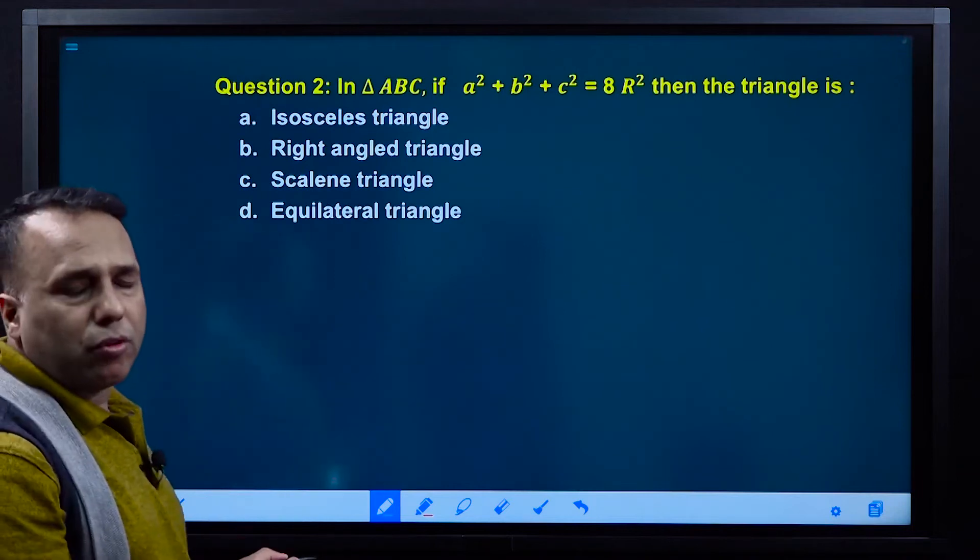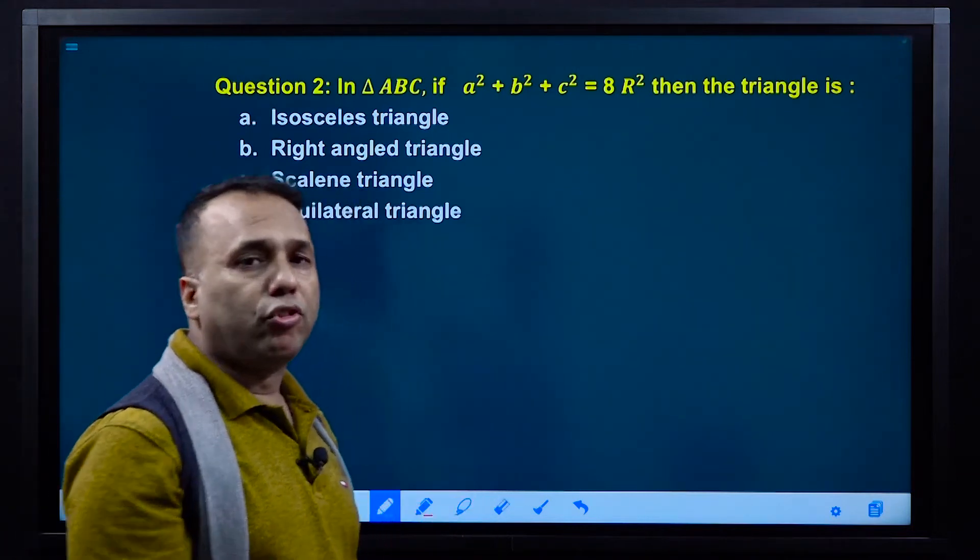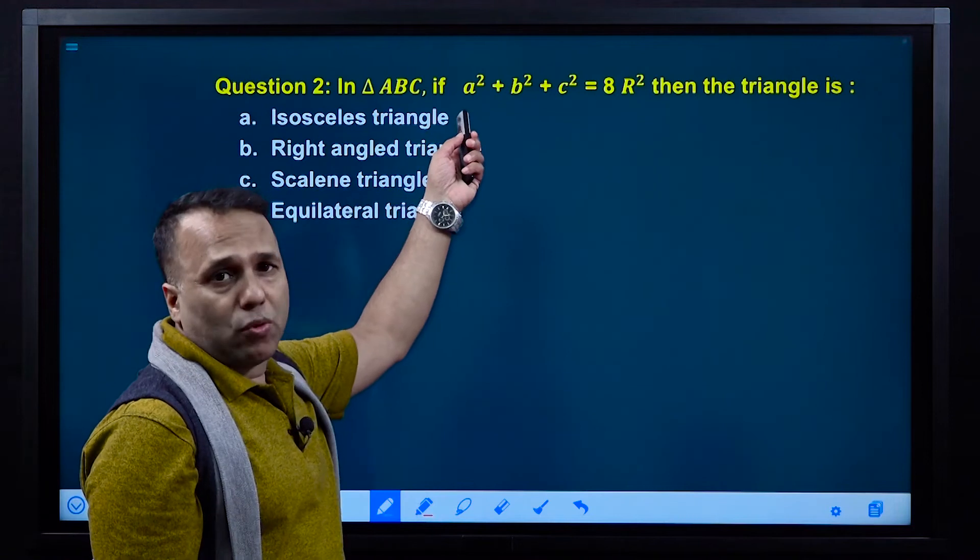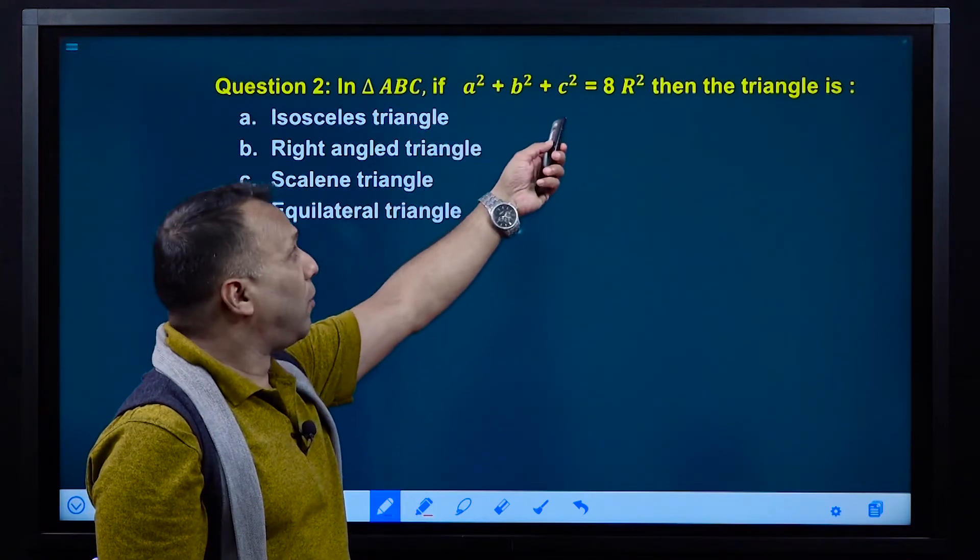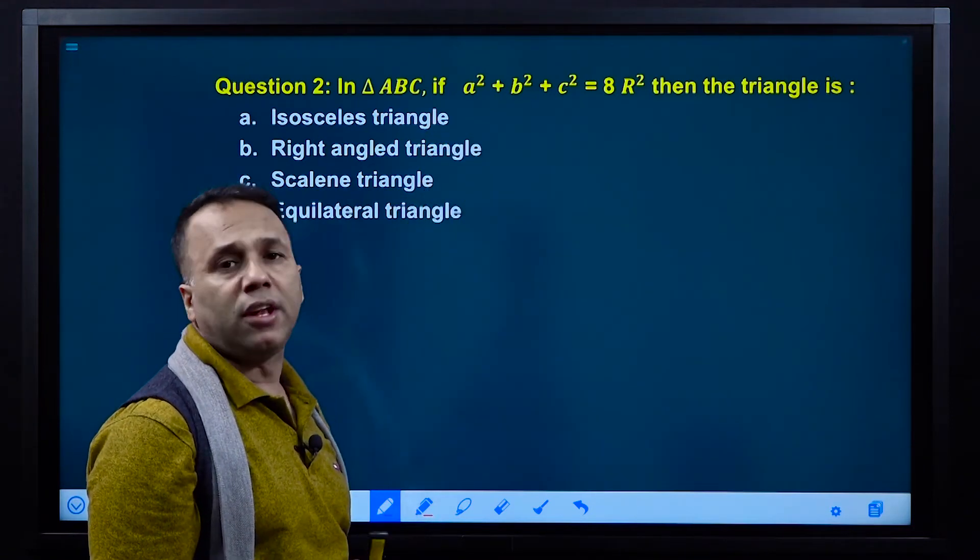We can do this using the process of 2R sin A, 2R sin B, 2R sin C, then the triangle equation.